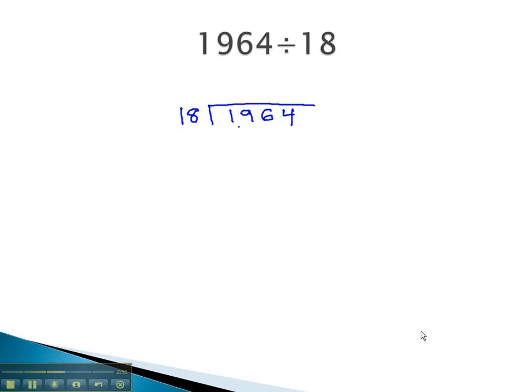18 goes into 19 once. 1 times 18 is 18, and we'll subtract, which will give us 1. Bring down the next digit of 6. How many times does 18 go into 16?